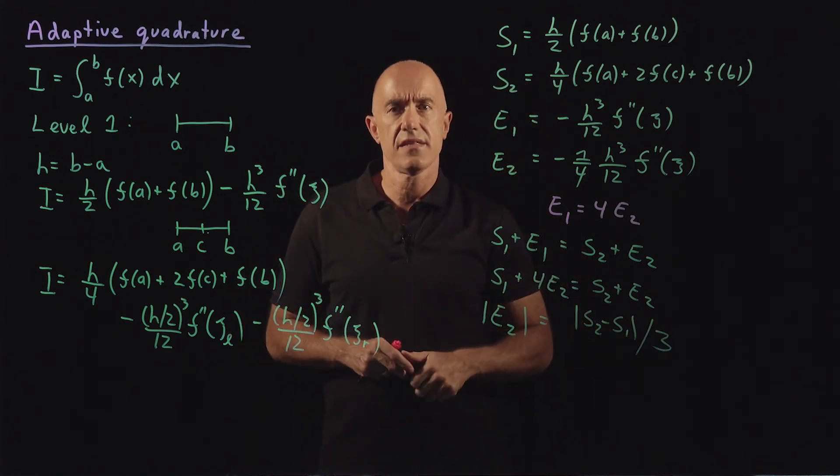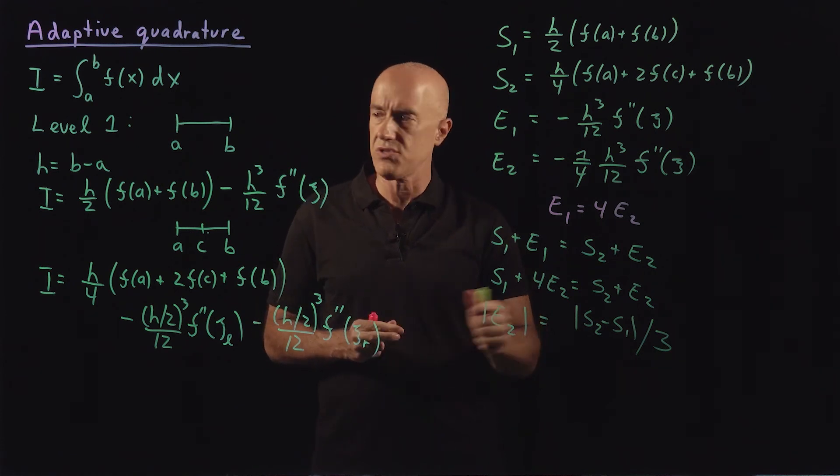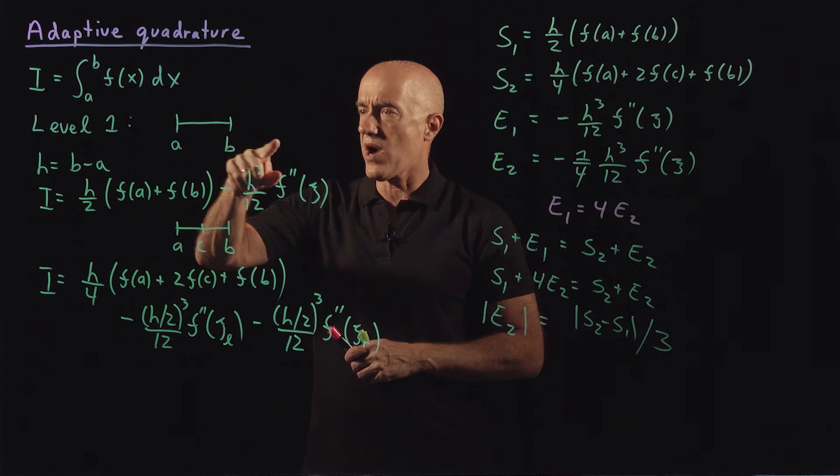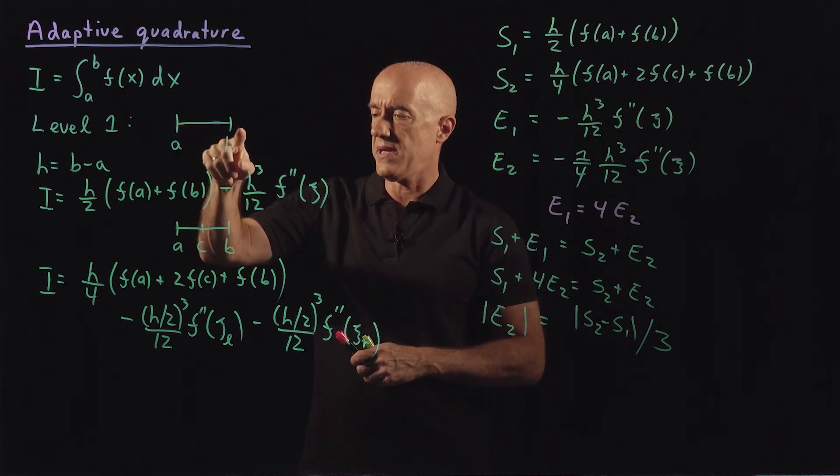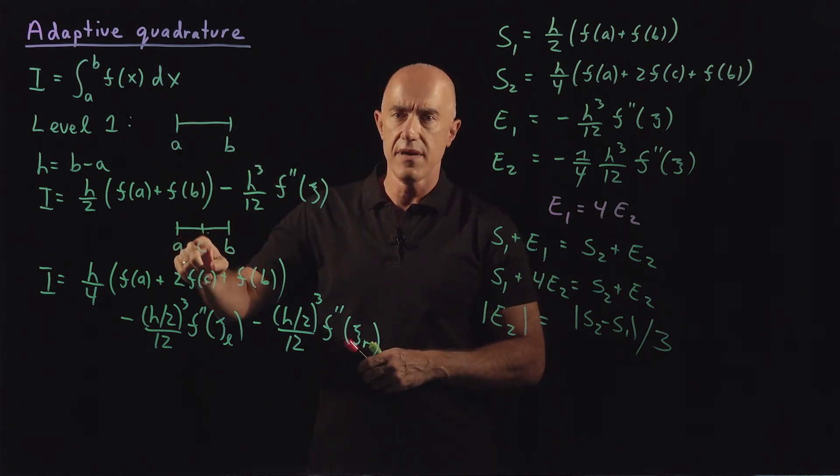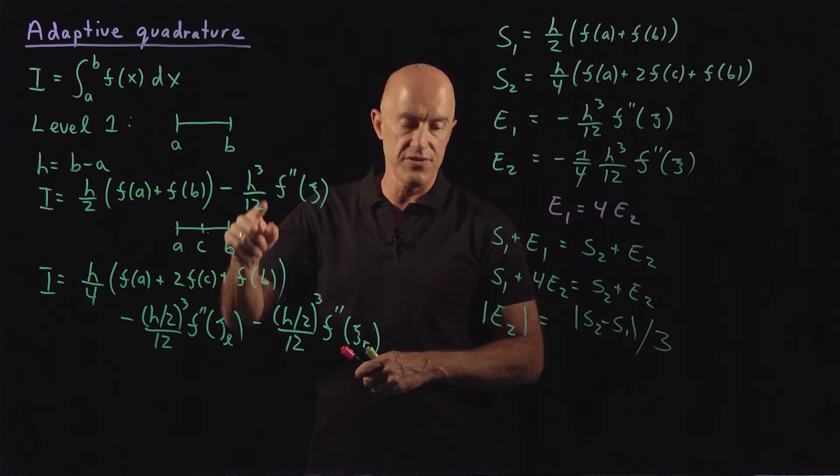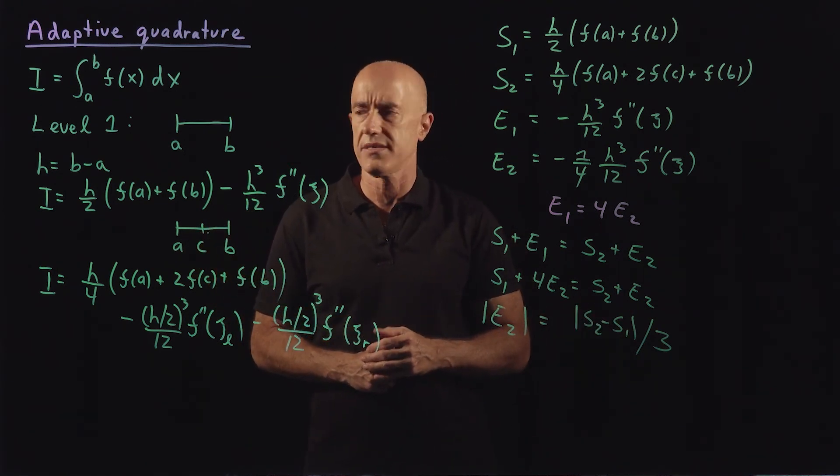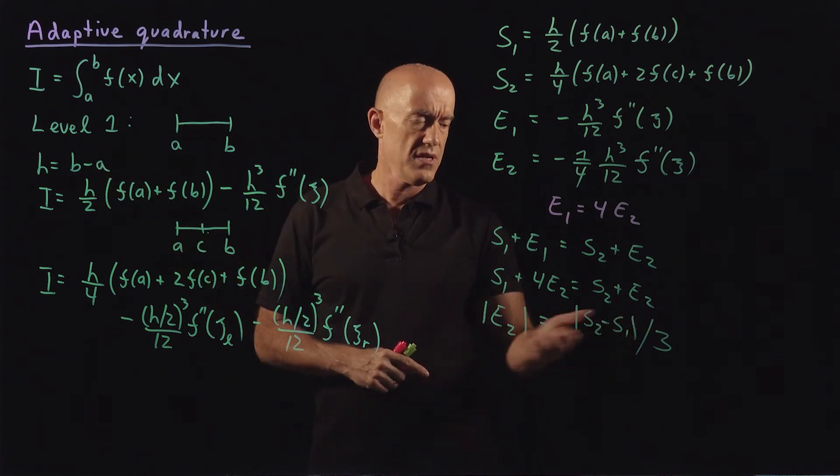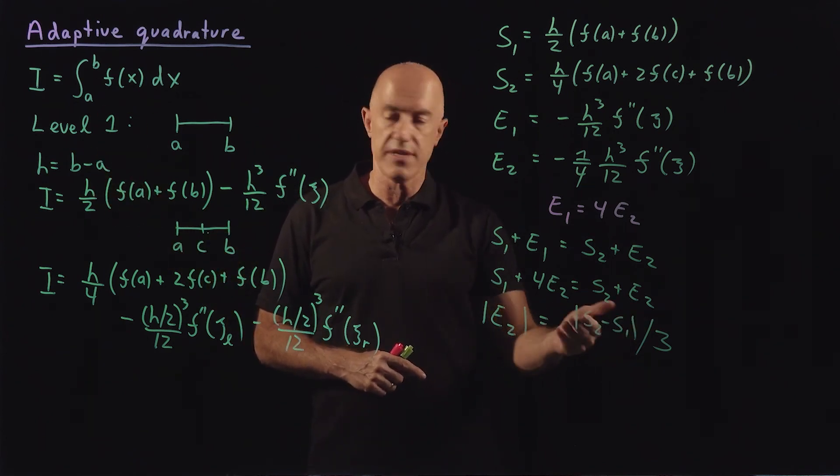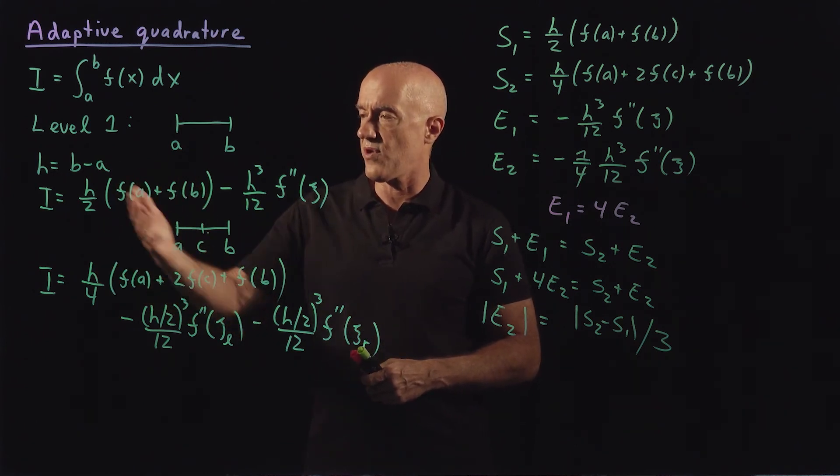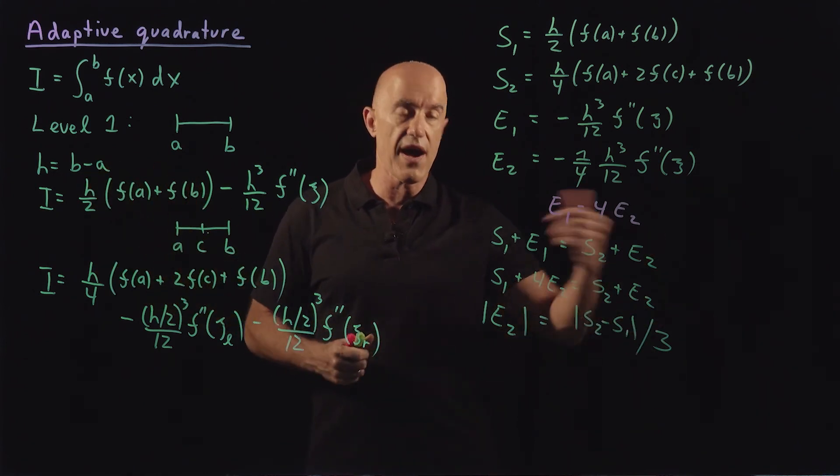This is the key to adaptive quadrature. By doing this integral at level one twice, once from a to b, and then the second time from a to c and from c to b, we can get a handle on what the error is in the integral. So the error is going to be the difference between s2 and s1, these two integration formulas, divided by 3.